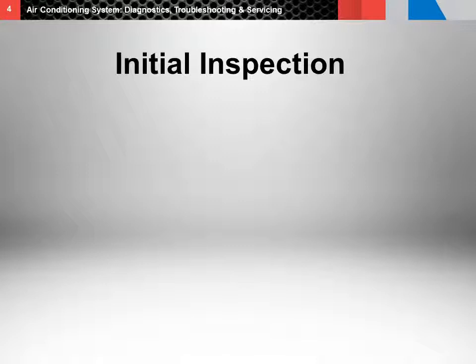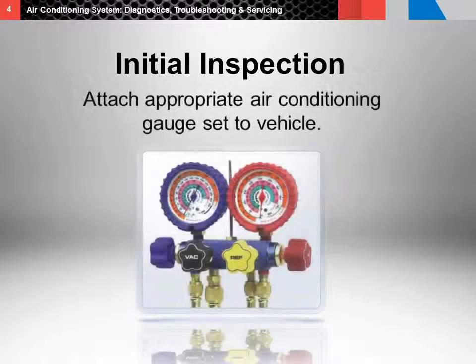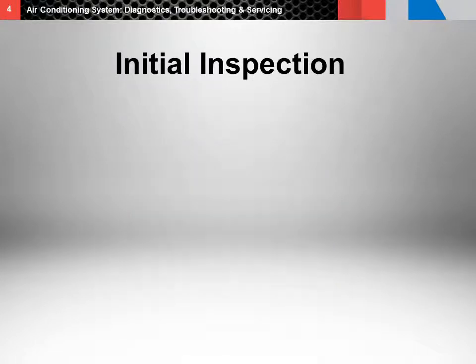Before jumping into diagnostics, complete an initial inspection of the air conditioning system. The first step in any inspection is attaching the appropriate air conditioning gauge set to the vehicle. This allows you to confirm whether or not the vehicle has refrigerant in the system. You can then determine whether the pressure switches should activate or whether the system has no refrigerant, which may indicate a system refrigerant leak.